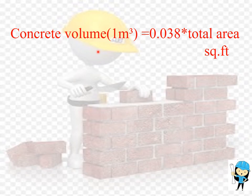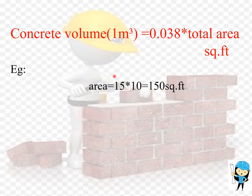The first rule is: 1 meter cube of concrete volume is equal to 0.038 times the total area in square feet. Now we are going to calculate the concrete volume. We have taken the plot size of 15 feet in length and 10 feet in width. Using the formula length into breadth, we get 150 square feet as the area.